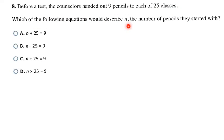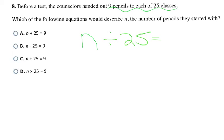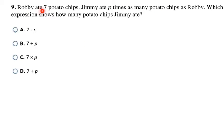This question says counselors hand out nine pencils to each of the 25 classes. Which equation describes N, the number of pencils they started with? They start with N pencils and divide them among 25 classes, and each class ends up with nine pencils. Since they're dividing those pencils out, we need a division symbol in our answer, which is A.